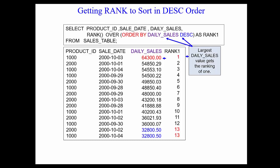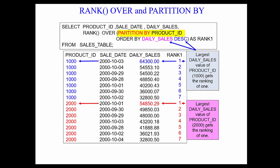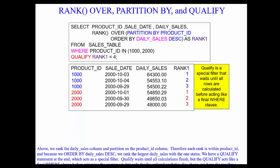Now if I put my PARTITION BY, they ask: what are we ranking? Within each product ID, we're ranking by daily sales descending. So now it groups it. PARTITION BY means GROUP BY in a sense for analytics. I'll show all my 1,000s and rank from highest to lowest. When we get to the 2,000s, that's a different grouping — it starts over and ranks again. The rank is a fantastic ordered analytic. Now, once again, I can say QUALIFY: I only want to see the highest three sales per product ID. So I partition by product ID, ORDER BY daily sales descending. Then I say QUALIFY the rank less than 4, and it gives me the top three sales per product ID.